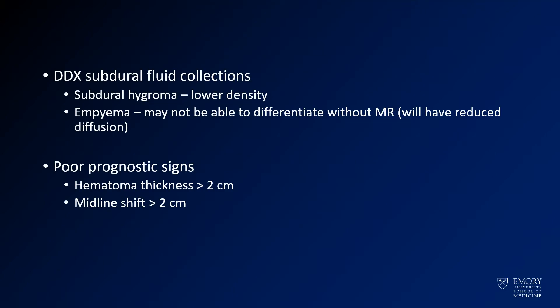The differential in these cases includes subdural hygroma — these are lower-density collections that tend to be more uniform. If you had a subdural empyema, you wouldn't necessarily be able to tell, but subdural hematomas are much more likely. Poor prognostic signs are a hematoma thickness of more than two centimeters or a midline shift of more than two centimeters.